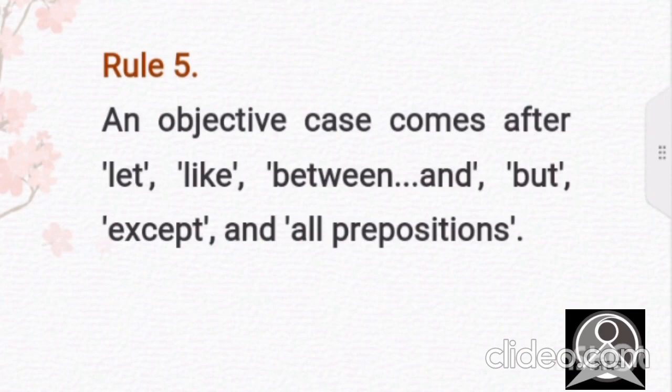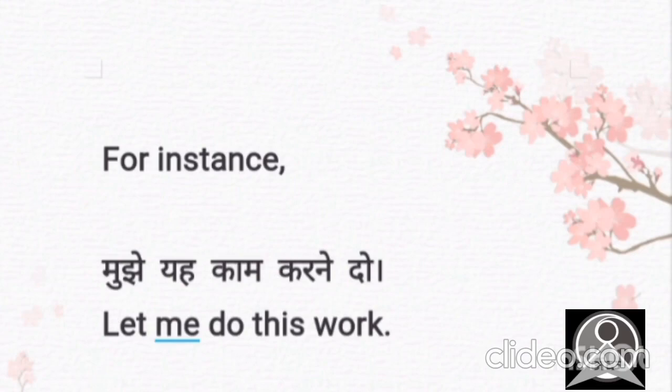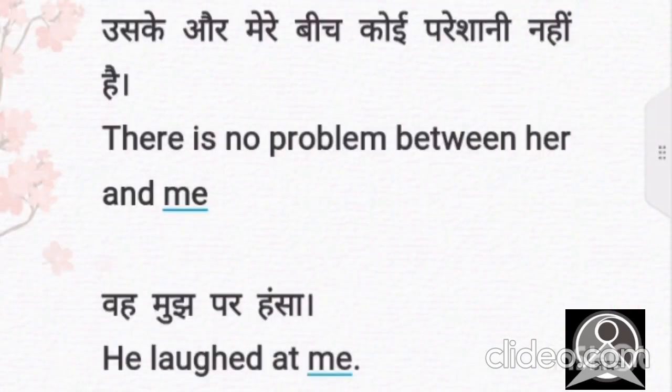The fifth rule says, an objective case comes after let, like, between, and, but, except. In all the prepositions, then there has to be the objective case. For instance, let me do this work. The second example. There is no problem between her and me. Here we are using me, the objective one. He laughed at me. Me again, not I.